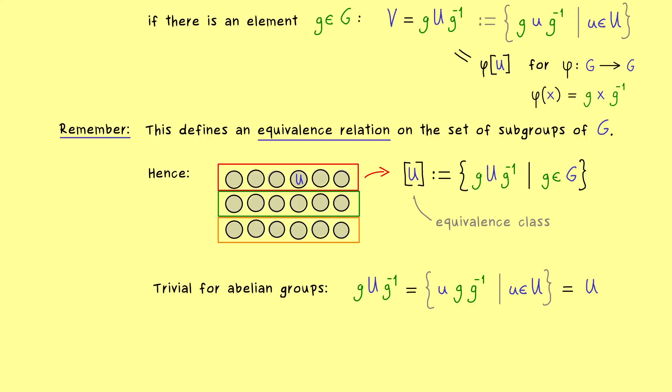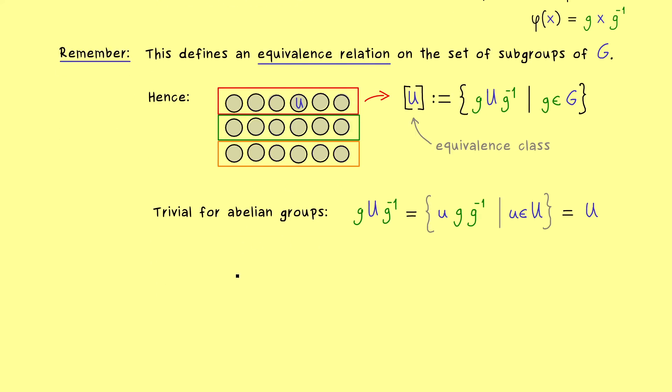Therefore for an abelian group this equivalence class here only has one element namely U. In other words the nice term of conjugate subgroups does not help at all for abelian groups.